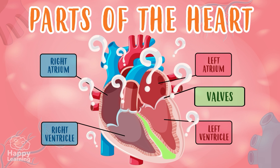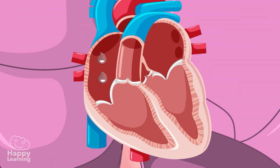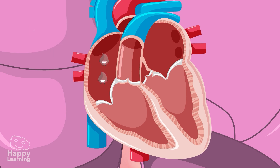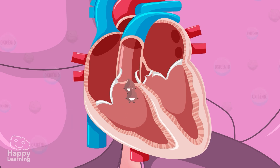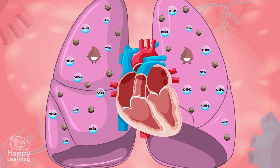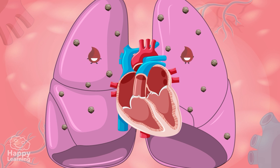Now we know the most important parts of the heart, but do you know how it works? It all begins in the right atrium, where deoxygenated blood — meaning blood with very little oxygen and nutrients — enters the heart. It then goes through the first valve to the right ventricle, from where the heart sends the blood directly to the lungs.